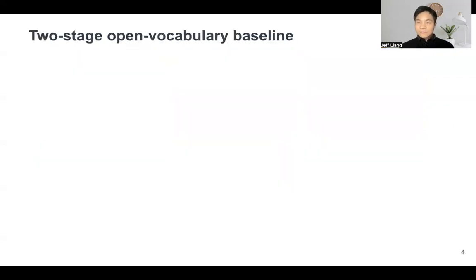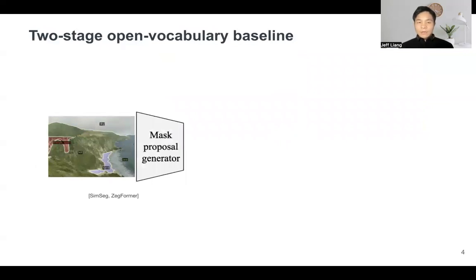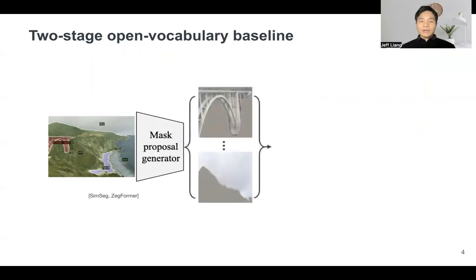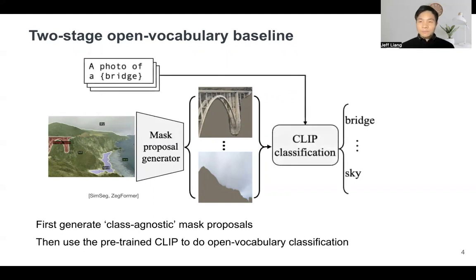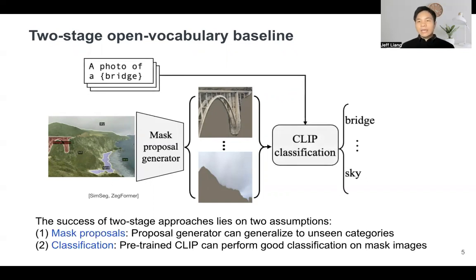So how can we do this? Let's first start with our two-stage open vocabulary baseline, SimpleSeg and ZegFormer. Given an input image, we first put the image into a mask proposal generator, like MaskFormer or Mask2Former. It can generate a bunch of class-agnostic mask proposals. Then we feed the mask proposals as well as the candidate categories into CLIP, and we perform open vocabulary classification over these mask proposals with CLIP. The success of the two-stage baseline lies on two assumptions: one is that the proposal generator generalizes well to unseen categories, and two, the pre-trained CLIP is expected to perform good classification on mask proposals.